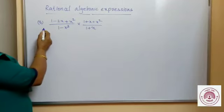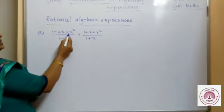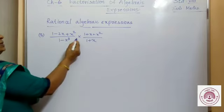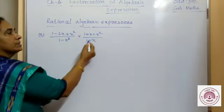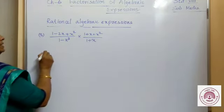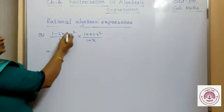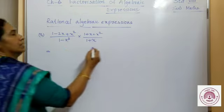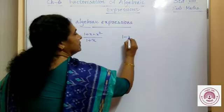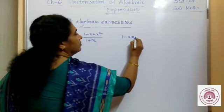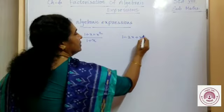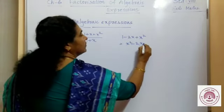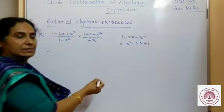Next question is question number 8: (1 - 2x + x²) upon (1 - x³) multiplied by (1 + x + x²) upon (1 + x). The numerator of the first rational algebraic expression is 1 - 2x + x², which can be rewritten as x² - 2x + 1. Just rearranging the terms, this is the expansion of (x - 1)².